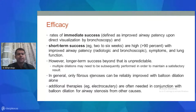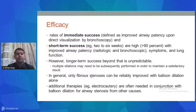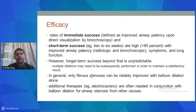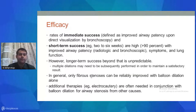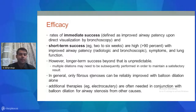Rates of immediate success, defined as improved airway patency on direct bronchoscopic visualization, and short-term success at 2–6 weeks are high, with improvements seen both radiologically and bronchoscopically in terms of symptoms and lung function. However, long-term success beyond that is unpredictable. Most benign strictures need more than one sitting, and if repeat dilatations are needed, stenting can be considered for longer-term symptom-free benefit. In general, only fibrous stenosis can be reliably improved with balloon dilatation alone; additional therapies like electrocautery are often needed for other causes.